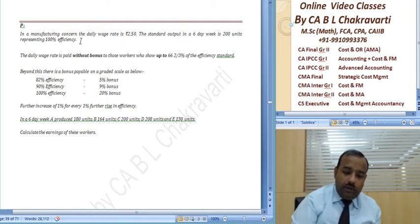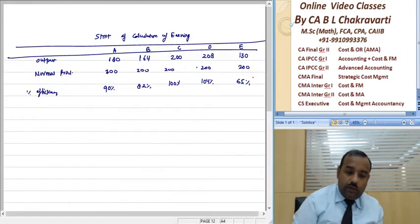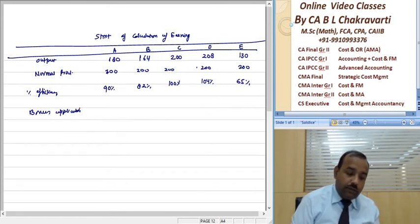So now what will be the applicable rate? Bonus applicable: for this one there will be none, for this 5% will apply, for this 9% will apply.